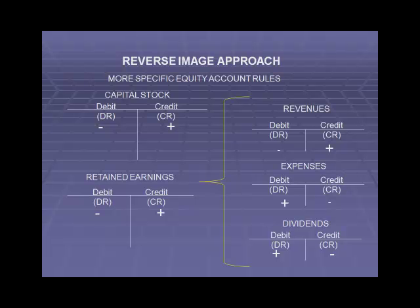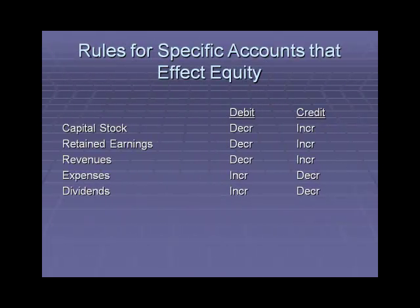When we get to Chapter 4, you'll see all this come together — how revenues minus expenses minus dividends change retained earnings from year to year. So in summary, the rules for specific accounts that affect equity: capital stock, decrease with a debit, increase with a credit. Retained earnings, decrease with a debit, increase with a credit. Revenues, decrease with a debit, increase with a credit. Expenses, increase with a debit, decrease with a credit. And dividends, increase with a debit, decrease with a credit.